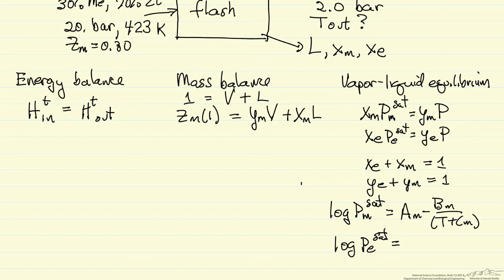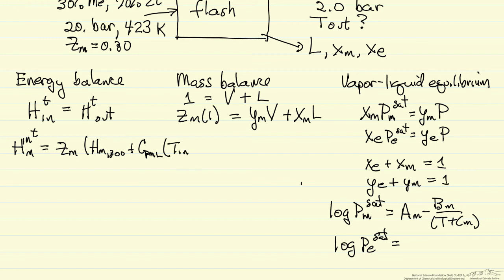The big thing we need more information on is the energy balance, so let's look at the terms. We have energy coming in for methanol and ethanol. For methanol energy in, this is a total energy, so I have Z_m moles — Z is the mole fraction, number of moles is one — times the enthalpy. I pick my reference temperature of 300 K, so enthalpy of methanol at 300 plus the liquid heat capacity of methanol times (T_in minus 300). Enthalpies are arbitrary; only differences matter, so I set the reference enthalpy equal to zero. I do the same for total ethanol in with the corresponding terms.